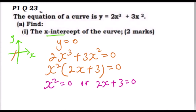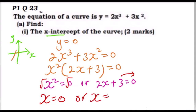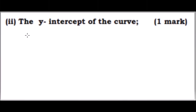Taking the square root of both sides gives x equals zero. For the other factor, we take 3 to the other side and divide by 2, giving x equals minus three over two. So those are the x-intercepts — where the graph cuts the x-axis — and by doing that you get two marks.